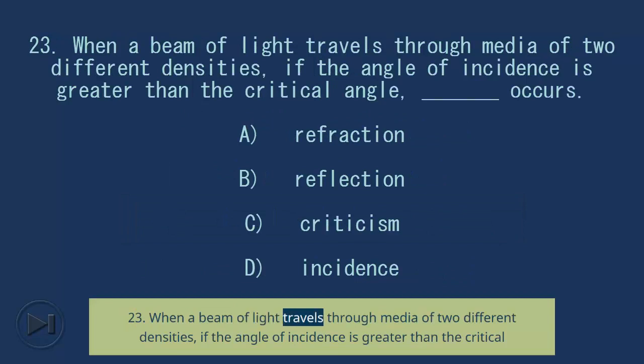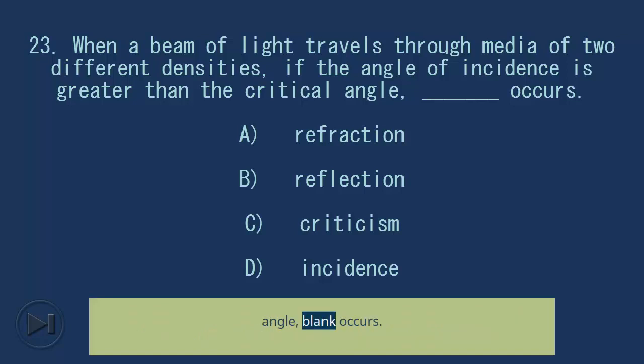Question 23: When a beam of light travels through media of two different densities, if the angle of incidence is greater than the critical angle, blank occurs. A) refraction, B) reflection, C) criticism, D) incidence. Answer: B, reflection.